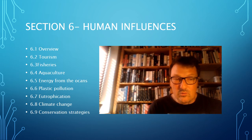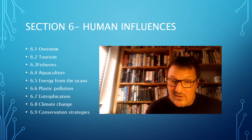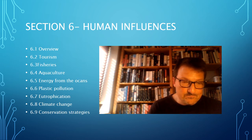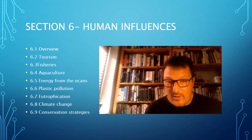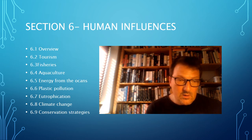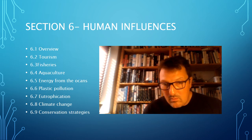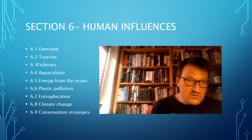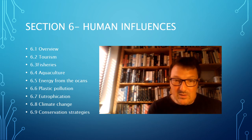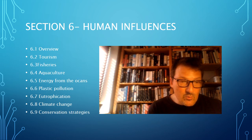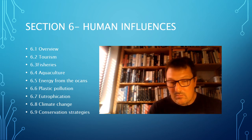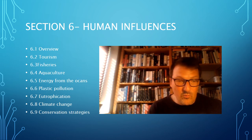6.4 looks at aquaculture — how to farm fish and marine organisms. 6.5 looks at energy from the ocean: we're going to look at oil and oil drilling, how oil is moved around in tankers, how to try to limit oil pollution, and look at the economic and social advantages and disadvantages of using fossil fuels. We're also going to look at renewable energy from the ocean in the form of wind, wave, and tidal energy.